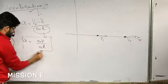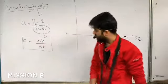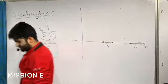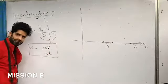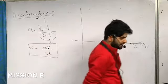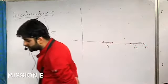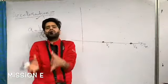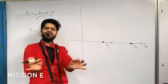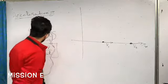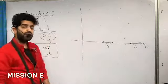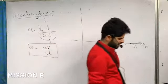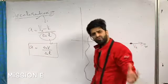This equation represents the acceleration. You may ask why there is no vector sign here — because I am studying motion in one dimension. In one-dimensional motion, positive and negative signs are sufficient to indicate direction; you don't need to treat anything as a vector.